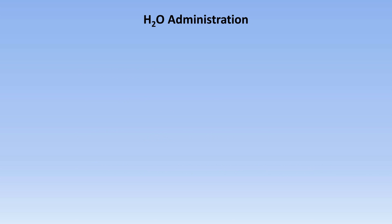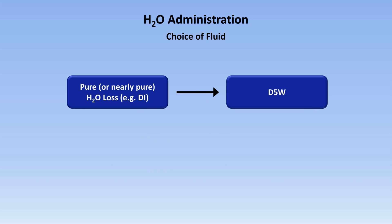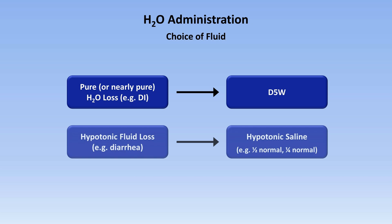To briefly summarize choice of fluid: hypernatremia occurring in the setting of pure or nearly pure water loss, such as that seen in DI, should be treated with D5W — that's 5% dextrose in water. Hypernatremia occurring with hypotonic fluid loss, such as that seen in diarrhea, should be treated with hypotonic saline solutions, such as either half normal saline or quarter normal saline.